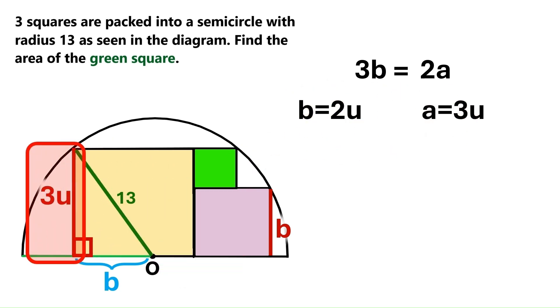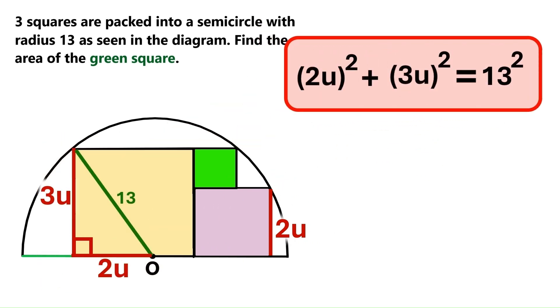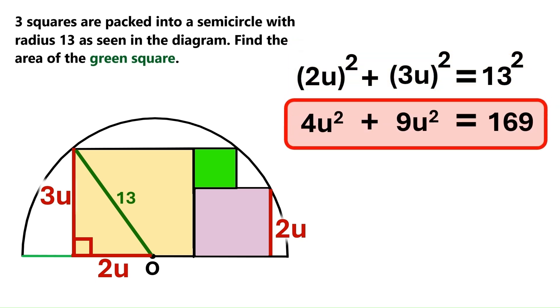So let's change this a to 3u. And this segment here is 2u. And this side is also 2u. Now let's go back to this right triangle and use the Pythagorean theorem once more. This is the equation we get. And in the next step we get this.